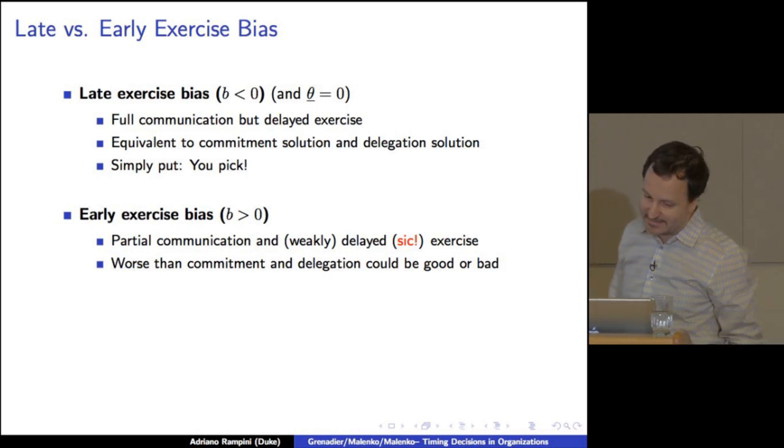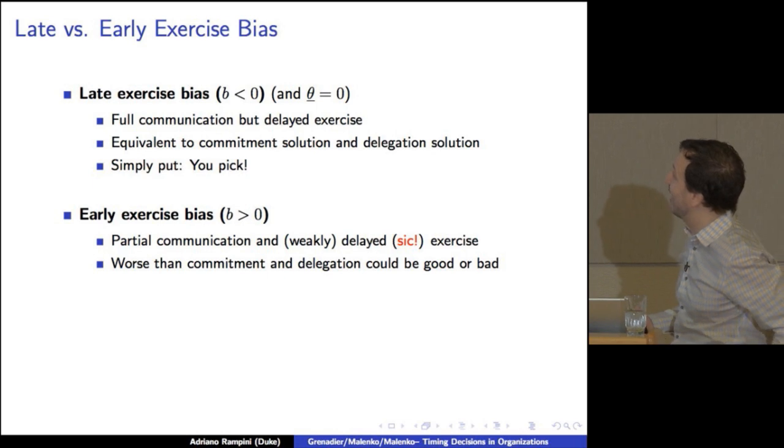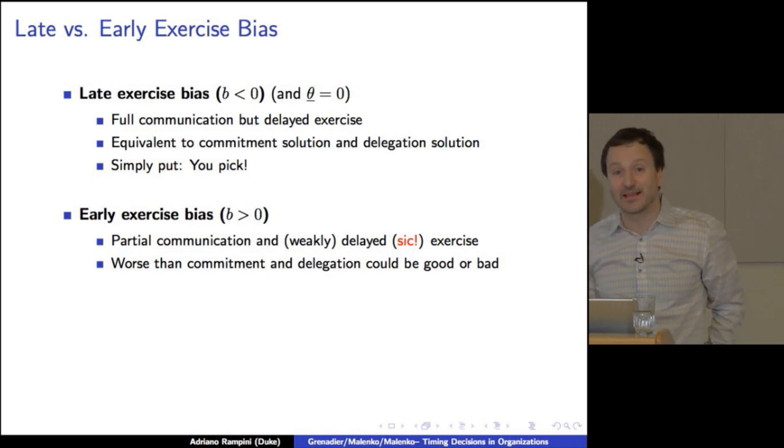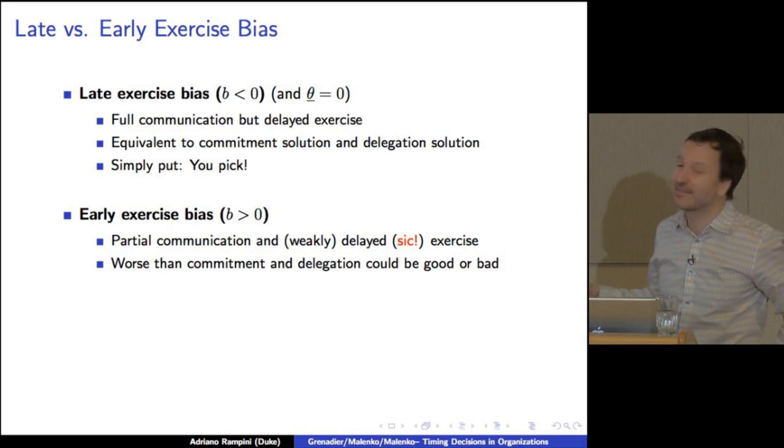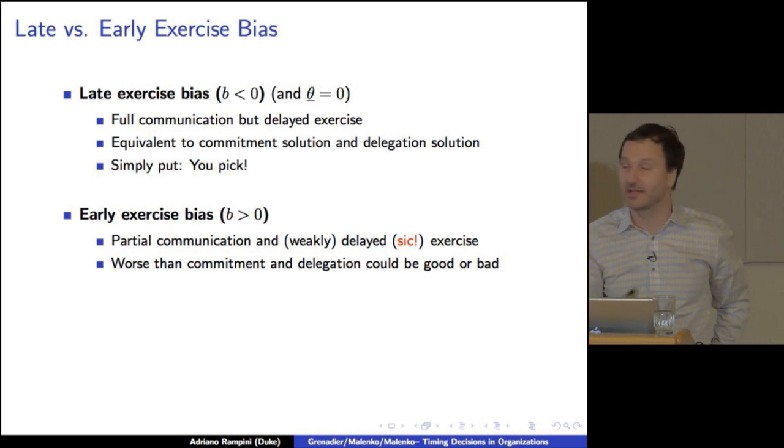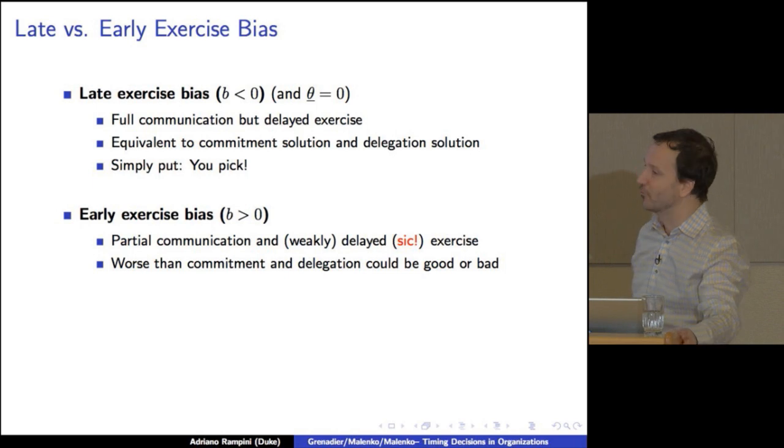Okay? And if it's early exercise instead, what happens? It becomes much more like a standard cheap talk game. You have partial communication. And interestingly, exercise is weakly delayed. Actually, in the best equilibrium, it's unbiased. But that's still weakly delayed. And so it's weakly delayed, despite the fact that the agent likes to exercise early. So I'll talk a little bit more about that. Commitment, the allocation is worse than commitment, so you can do better with commitment. And delegation can be good or bad.